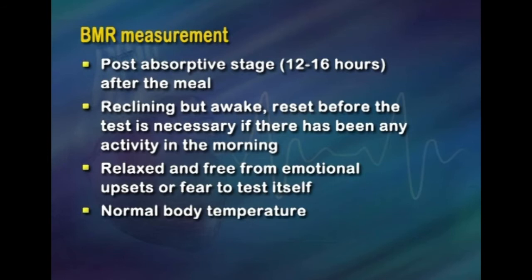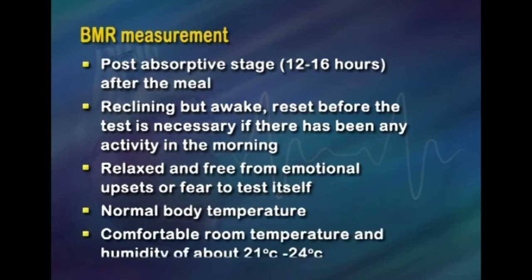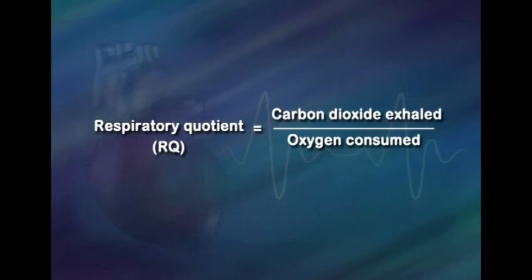Respiratory quotient is defined as the ratio of the volume of carbon dioxide produced to the volume of oxygen used on oxidation of a given amount of nutrient. The formula is: RQ = carbon dioxide exhaled divided by oxygen consumed. The respiratory quotient varies according to the food being oxidized.